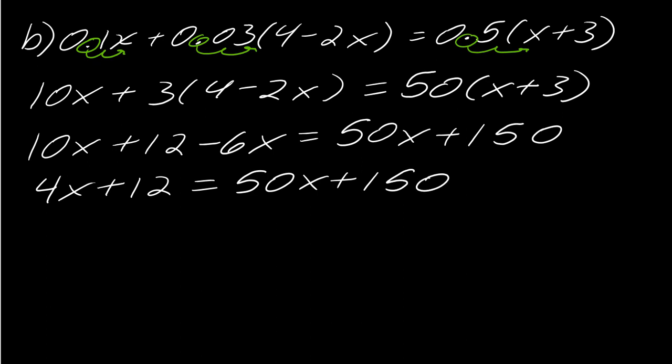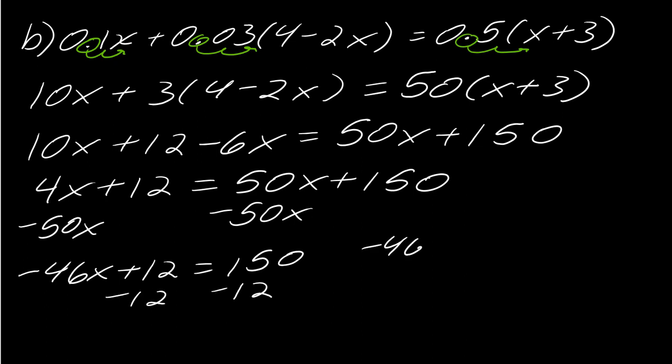So I want to get all the x's to one side and all the numbers to another. So I'll go ahead and I'll subtract off the 50x here. So this is going to give me negative 46x plus 12 and then this equals 150. And then I'll subtract off the 12. So now I get negative 46x equals 138 and then I will divide both sides by negative 46 and that will equal just negative 3.